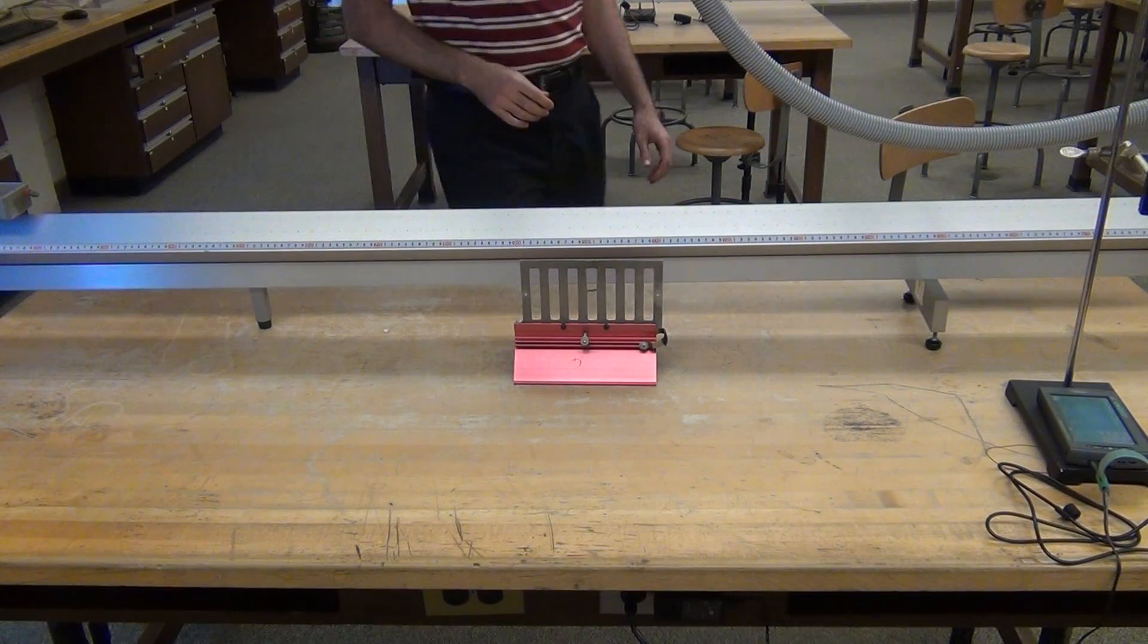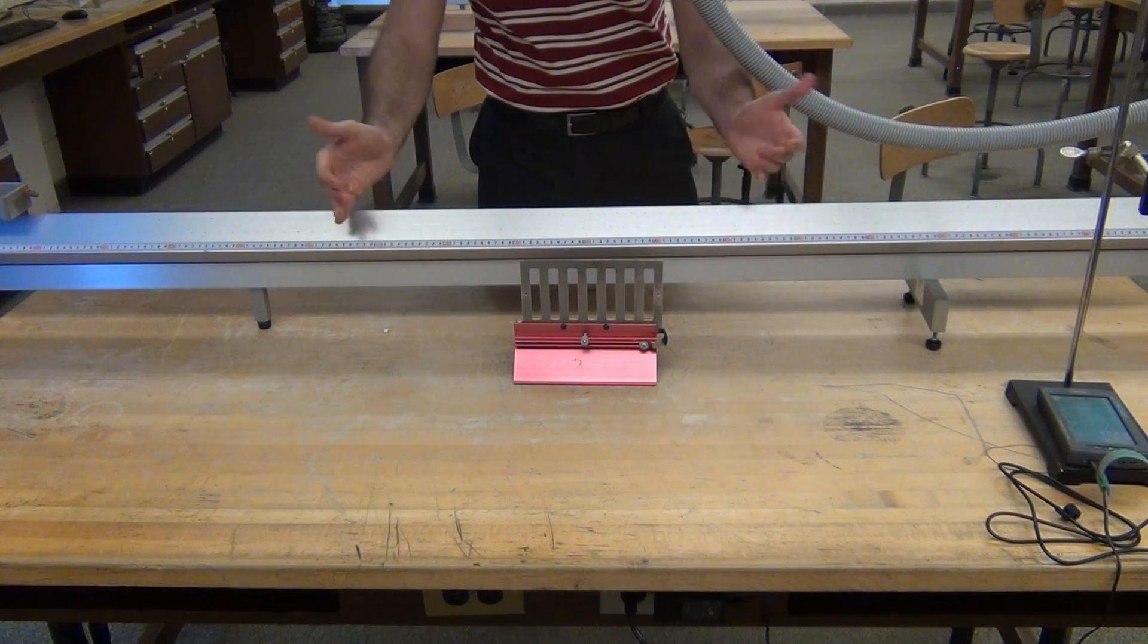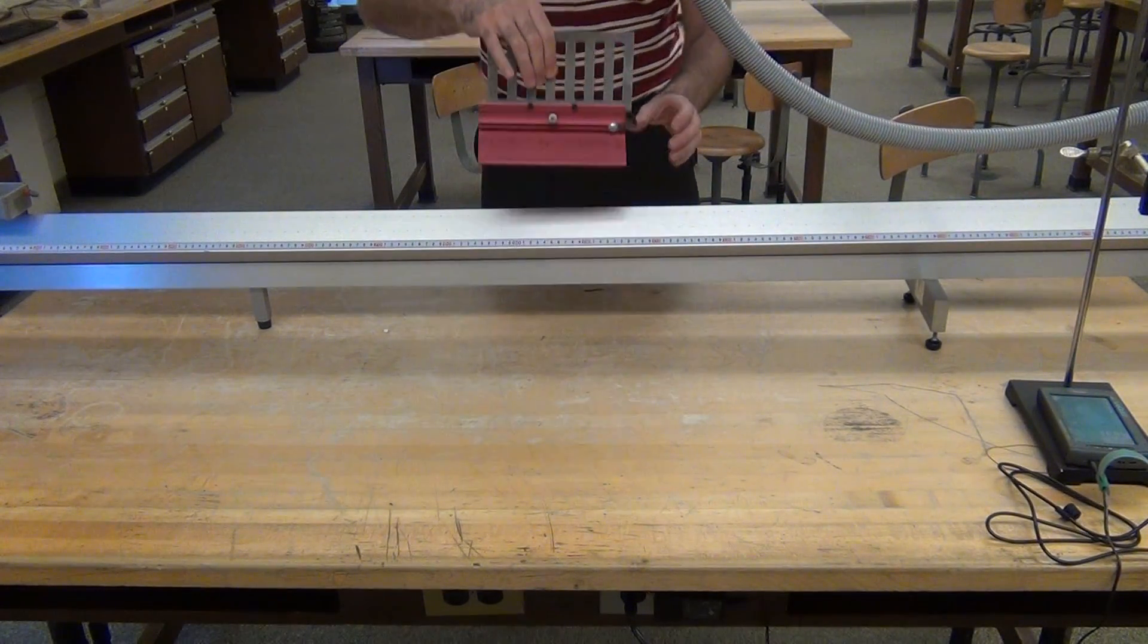To do a static leveling of the air track, we'll need the air track with air flowing through it and a glider cart.